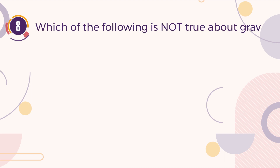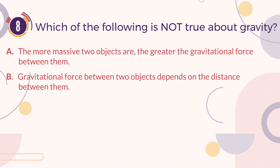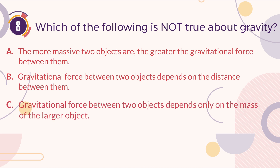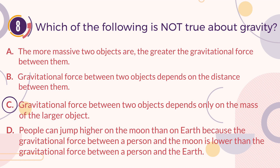Number 8. Which of the following is not true about gravity? A. The more massive two objects are, the greater the gravitational force between them. B. Gravitational force between two objects depends on the distance between them. C. Gravitational force between two objects depends only on the mass of the larger object. D. People can jump higher on the moon than on earth, because the gravitational force between a person and the moon is lower than the gravitational force between a person and the earth. The correct answer is C. Gravitational force between two objects depends only on the mass of the larger object.